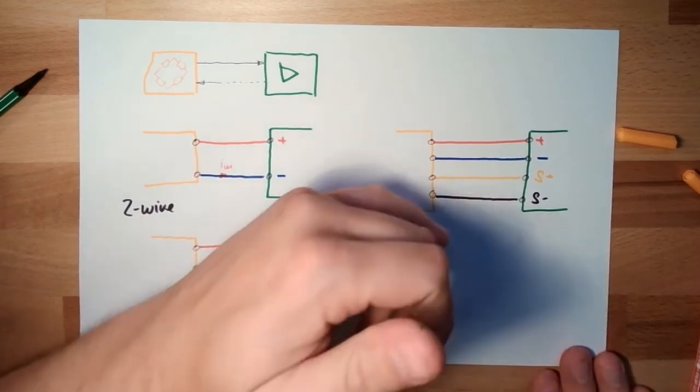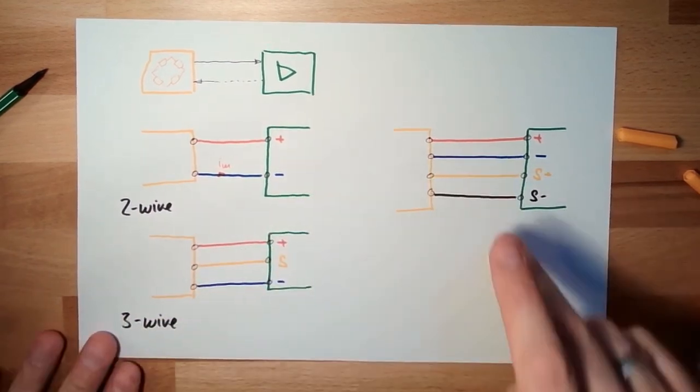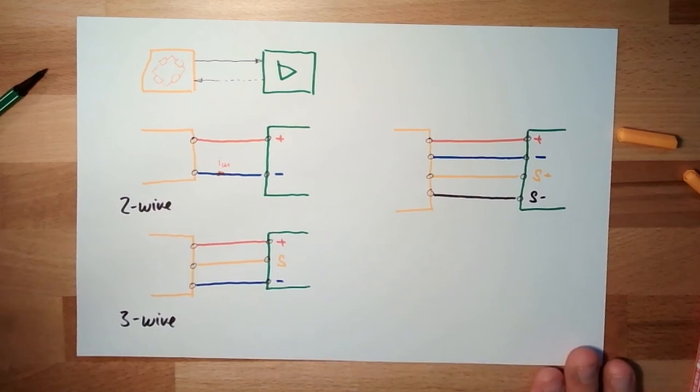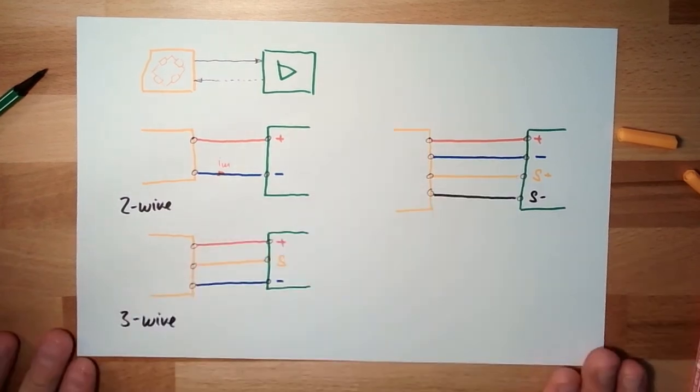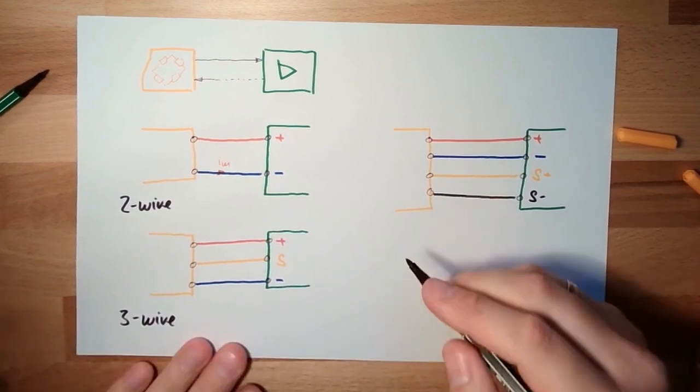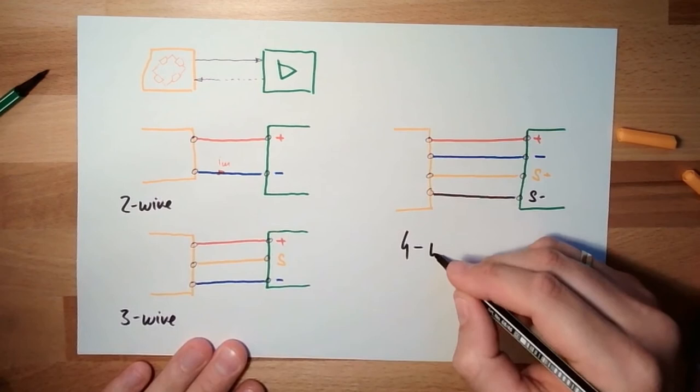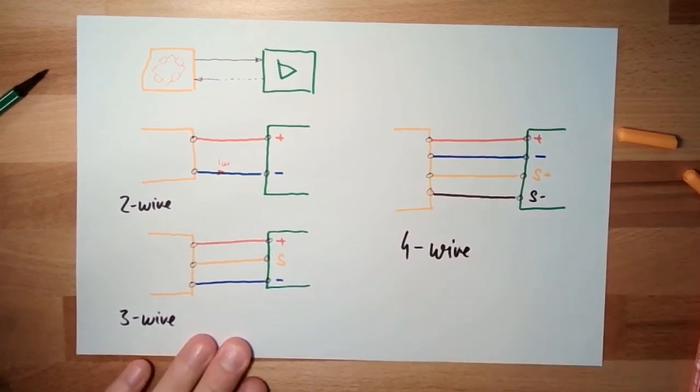And here again, it might be a current signal, or it might be a voltage signal. And this thing here, who could guess it, is called four-wire. Four-wire connections.